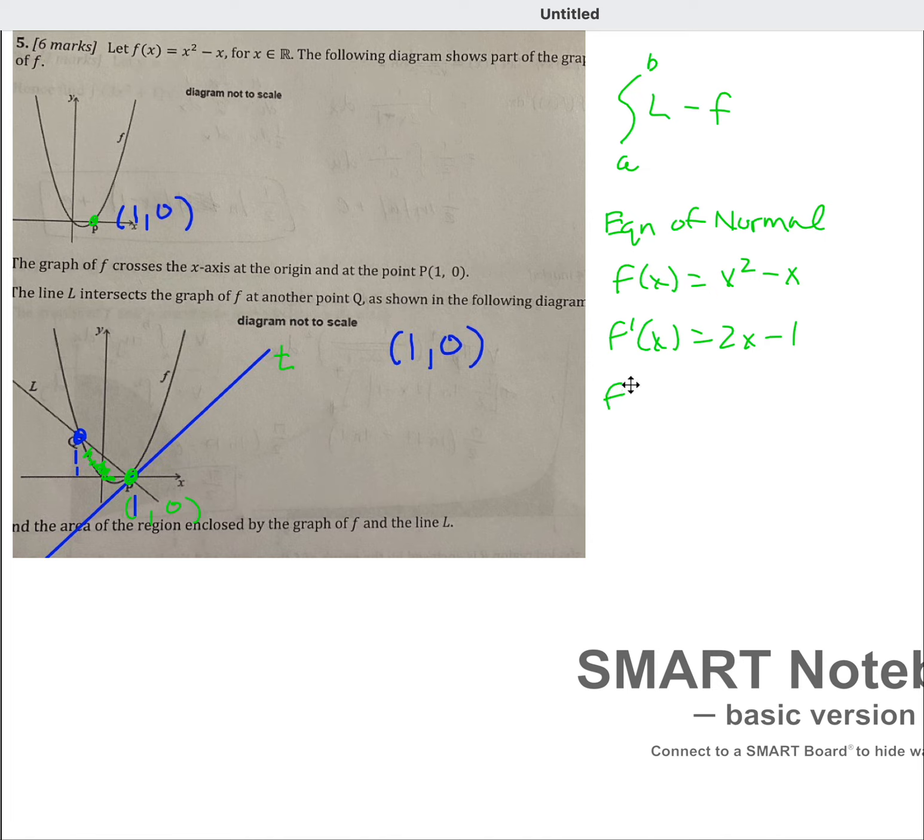So f prime of 1 is equal to 2 times 1 minus 1 equals 1, which means that the slope of the tangent line at the point 1, 0, so this blue tangent line right here, is equal to 1. And so the slope of the normal line, which is line L, is equal to negative 1.